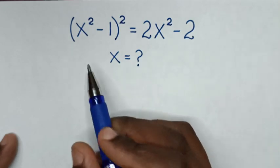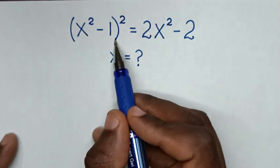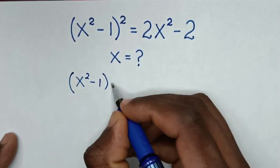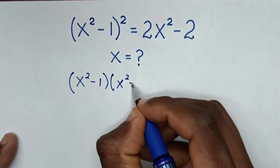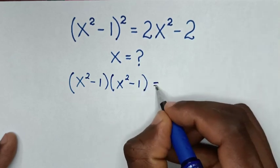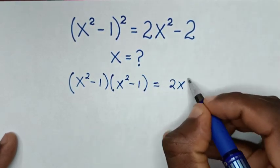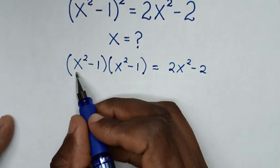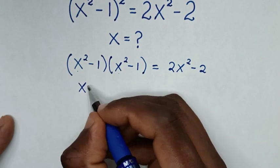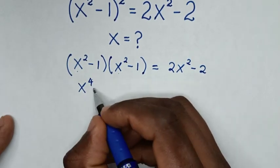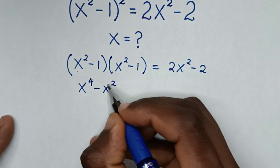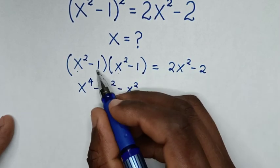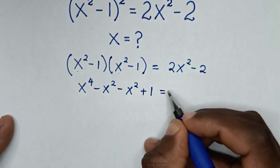From this expression, the bracket squared means (x² - 1) times itself, which equals 2x² - 2. Expanding: x² times x² is x⁴, x² times negative 1 is minus x², negative 1 times x² is minus x², and negative 1 times negative 1 is positive 1.